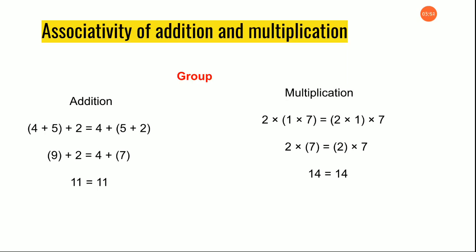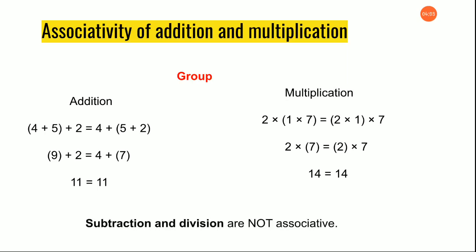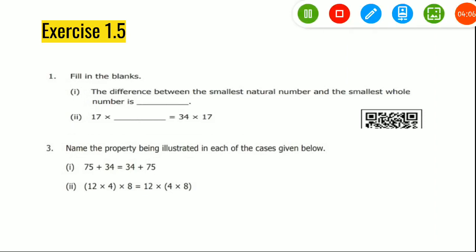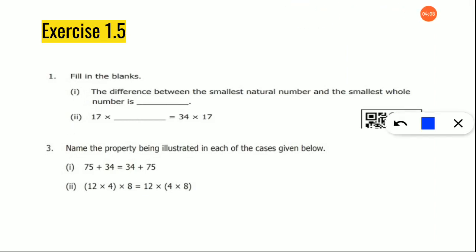For associativity also, subtraction and division do not work. You can check and see — take three numbers, use the brackets and separate them, and check whether both sides are equal or not. Now shall we solve some sums based on these properties? Look at the first question.